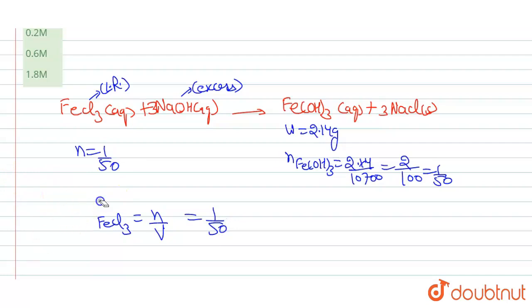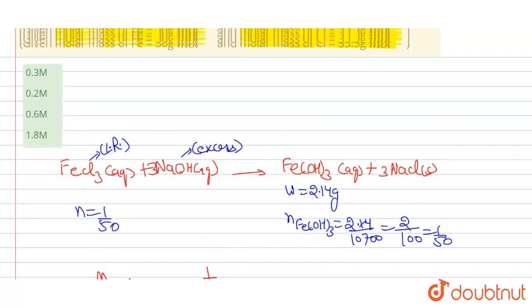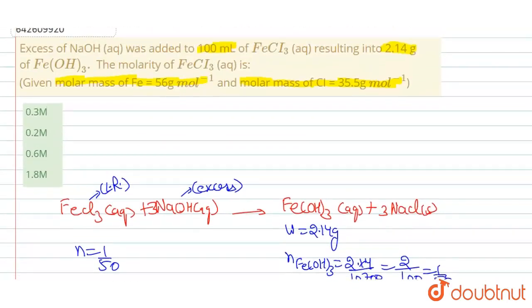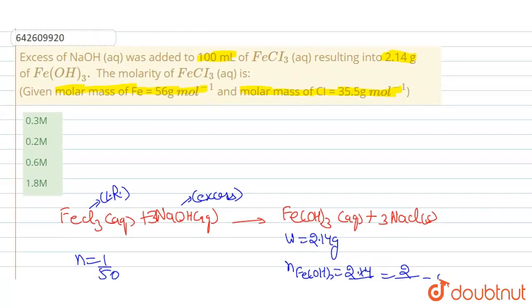Molarity of FeCl₃ = moles / volume. Moles = 1/50 and volume = 100 mL = 100/1000 L = 0.1 L. So molarity = (1/50) / (1/10) = 10/50 = 0.2 molar.